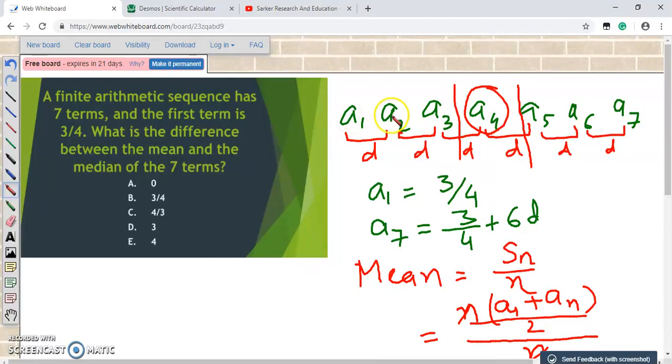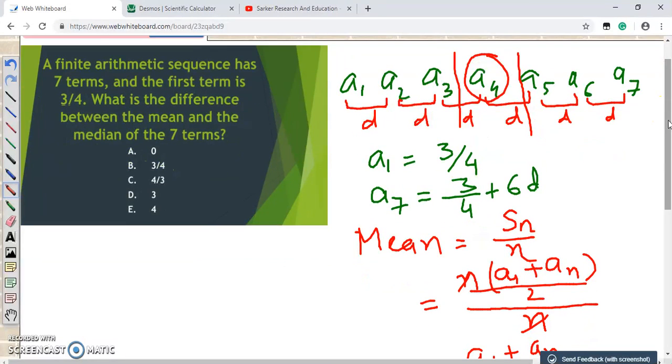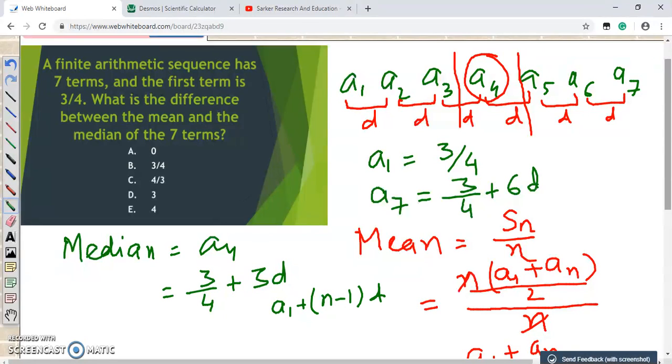So what is a4? So a1 was 3/4, a2 is 3/4 plus D, 3/4 plus 2D and this is 3/4 plus 3D. So our median is a4, a4 is 3/4 plus 3D. It is actually, if you have a lot of numbers, there is a shortcut that it is like the first term plus (n minus 1) into D. You can find any numbers in that way. So a1, 3/4 plus n minus 1, so in this case it is 4 minus 1, 4 minus 1 is 3 times D. So this is just a shortcut. So we figured out our median which is 3/4 plus 3D.